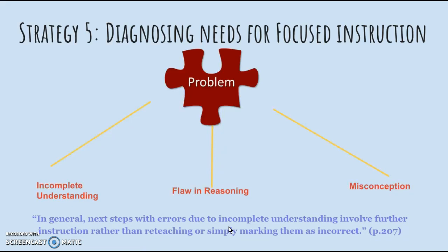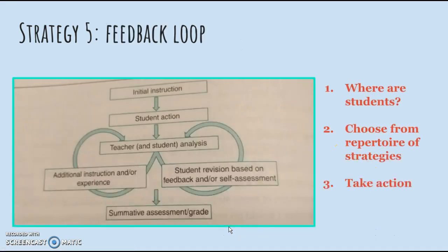In strategy five it talked about diagnosing needs for instruction and focused on three aspects of the problem. The problem might be because there is incomplete understanding, there's a flaw in reasoning, or there's a misconception. And then that leads us to the feedback loop. So where are my students? Once I've determined where my students are, I'm going to choose from several strategies that I might have and then put that into action.